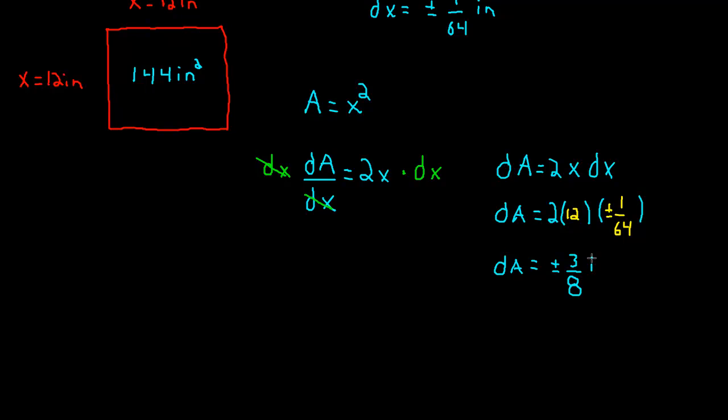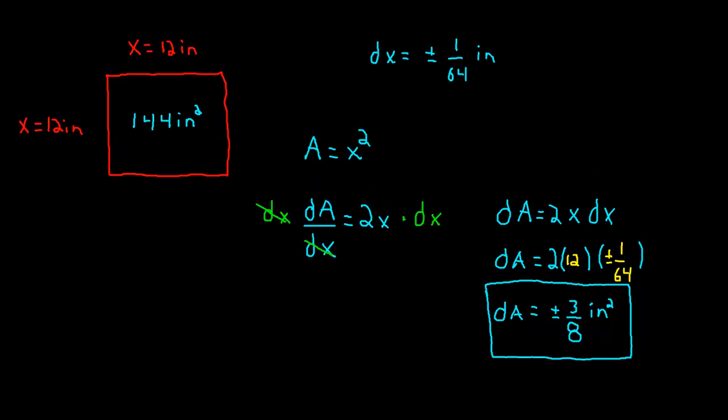Now, what are the units on this? Think about the units. Well, we're dealing with area. So it better be square units. Now, this is the raw error. That's the error. That's how much the area can actually be off. In other words, we know that the area of this square is supposed to be 144, but it could be as high as 144 plus this value or as low as 144 minus this value.